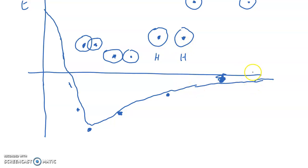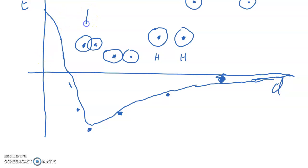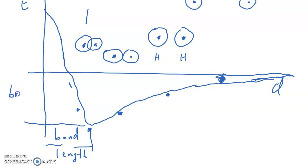When the atoms are at infinite distance apart, the potential energy is zero. At the optimized point — a certain distance — the atoms feel most comfortable where the positive nuclei don't repel each other too much but attract the electrons. That distance is called the bond length, and the energy at that point is called the bond energy, because it is lower than when the atoms are separated.